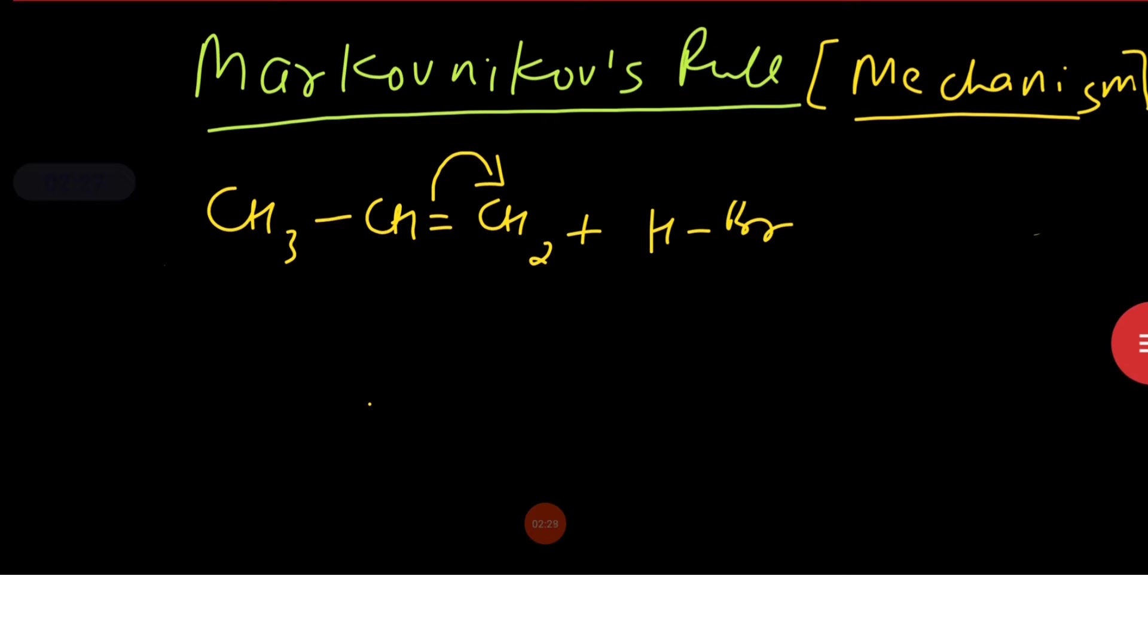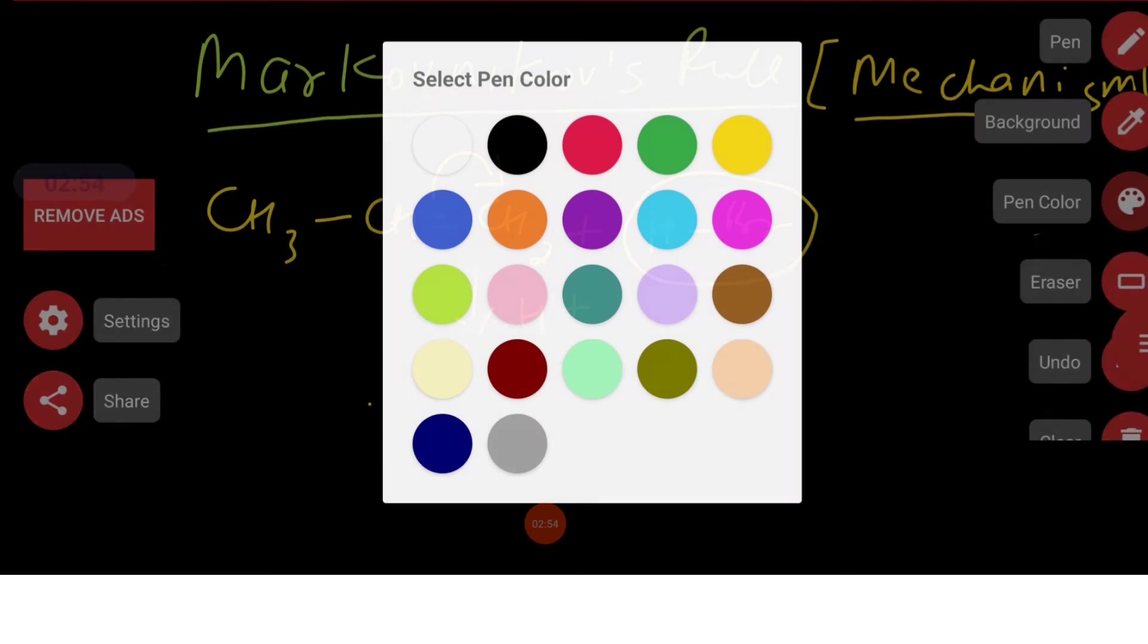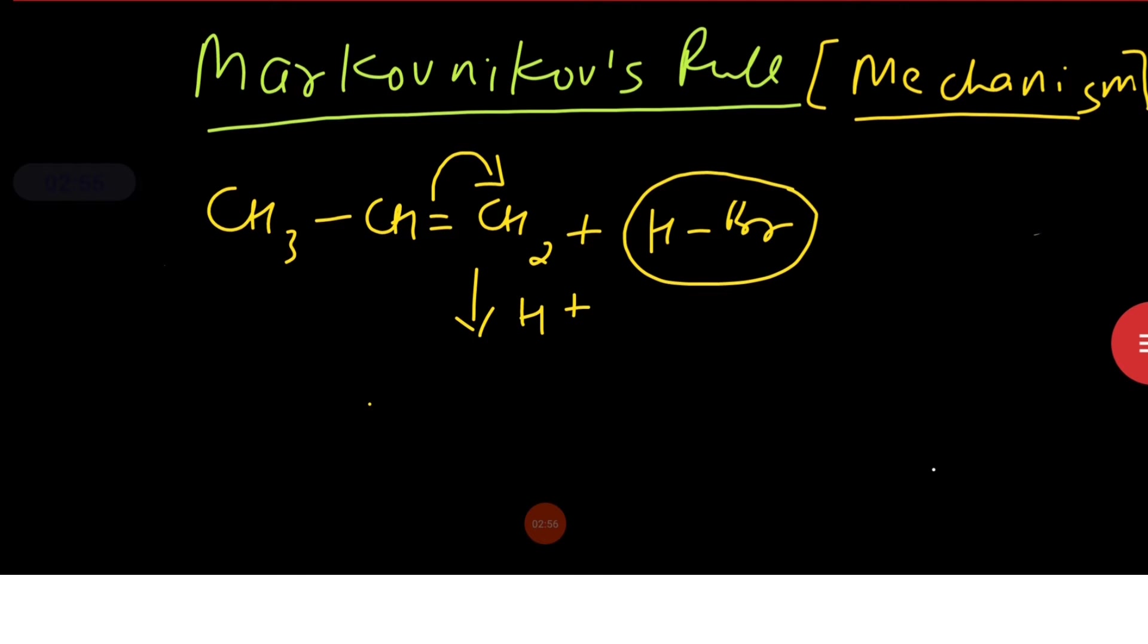We have studied under the influence of attacking reagent, pi electron shifts under electromeric effect. So this HBr provides electrophile H plus, and the pi electron, there are two possibilities - pi electron either can shift to right carbon atom or it can shift to left carbon atom. In both the case